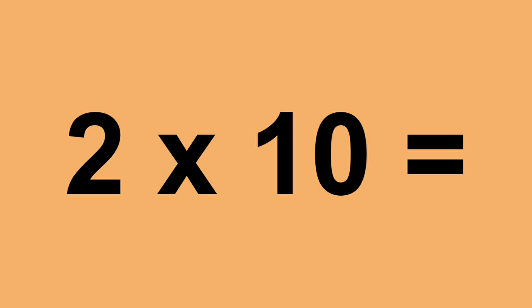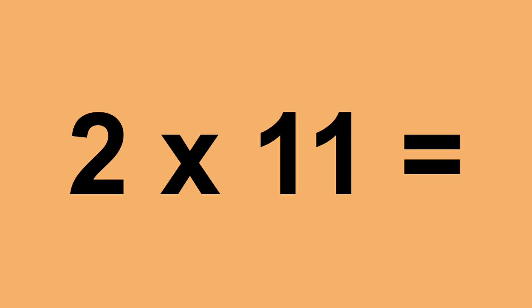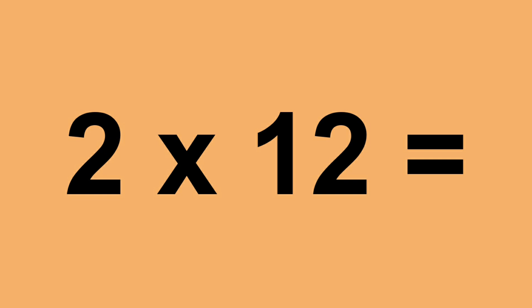Two times nine equals eighteen. Two times ten equals twenty. Two times eleven equals twenty-two. Two times twelve equals twenty-four.